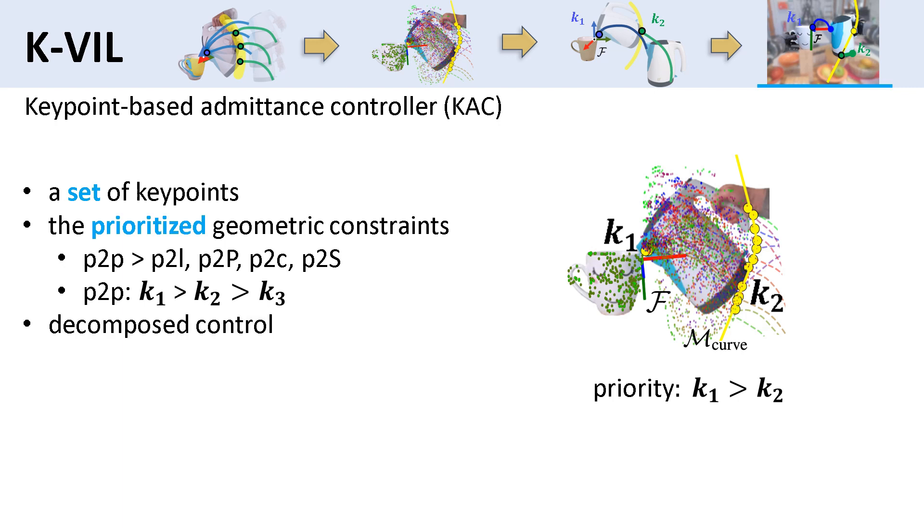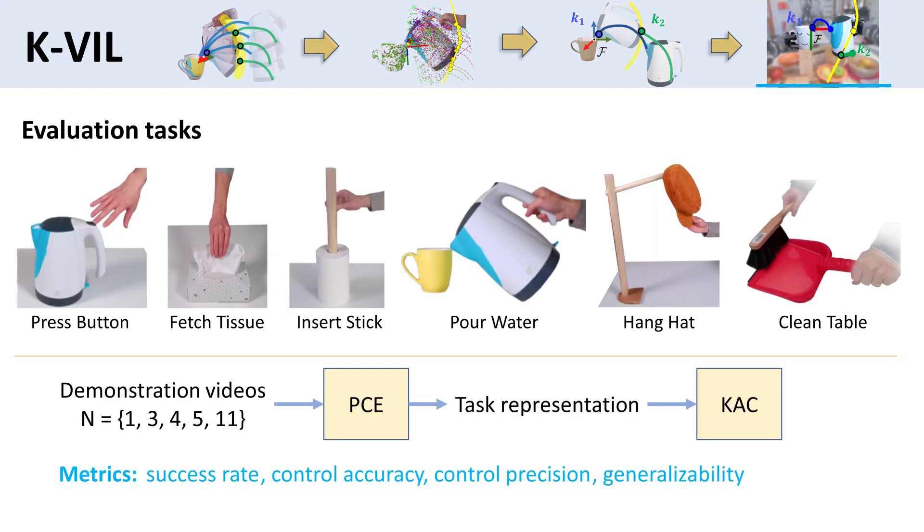We also keep the same decomposition strategy in the controller as learning the movement primitives. We evaluate our approach using the following six daily tasks, and extract KIVOS task representations from 1, 3, 4, 5, and 11 demonstrations respectively, and then reproduce them on the robot 20 times for each case. We finally measure the success rate, control accuracy, precision, and give insight into whether a learned task is generalizable.